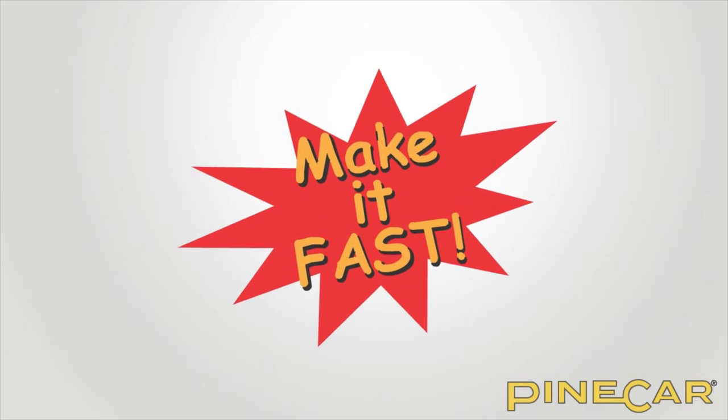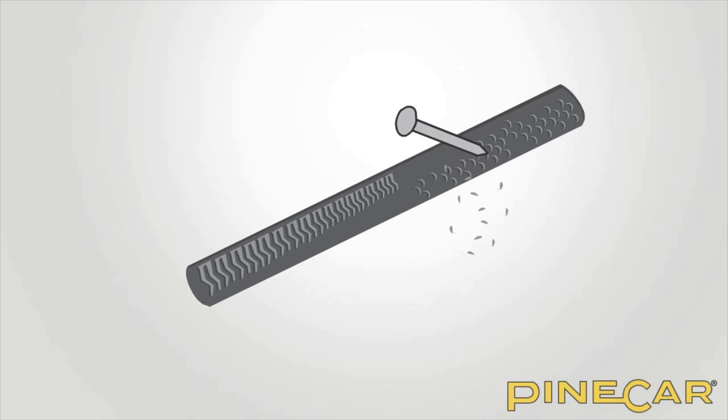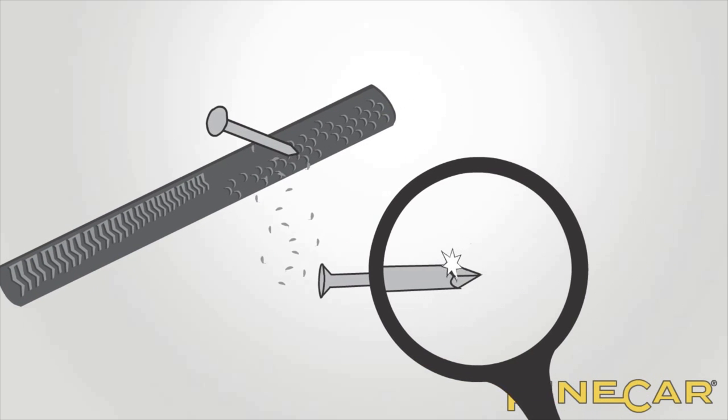Now it's time to make his car fast. Joe screws in some tungsten cog weights into the holes he drilled. Next he uses the micro polishing system to polish the axles before installing them on his car.